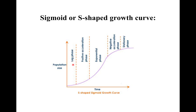In the lag phase, there is no or very little increase in population. During this phase, individuals adapt themselves to the new environment. In the positive acceleration phase, the population increases slowly initially, and the growth curve remains low and almost horizontal.